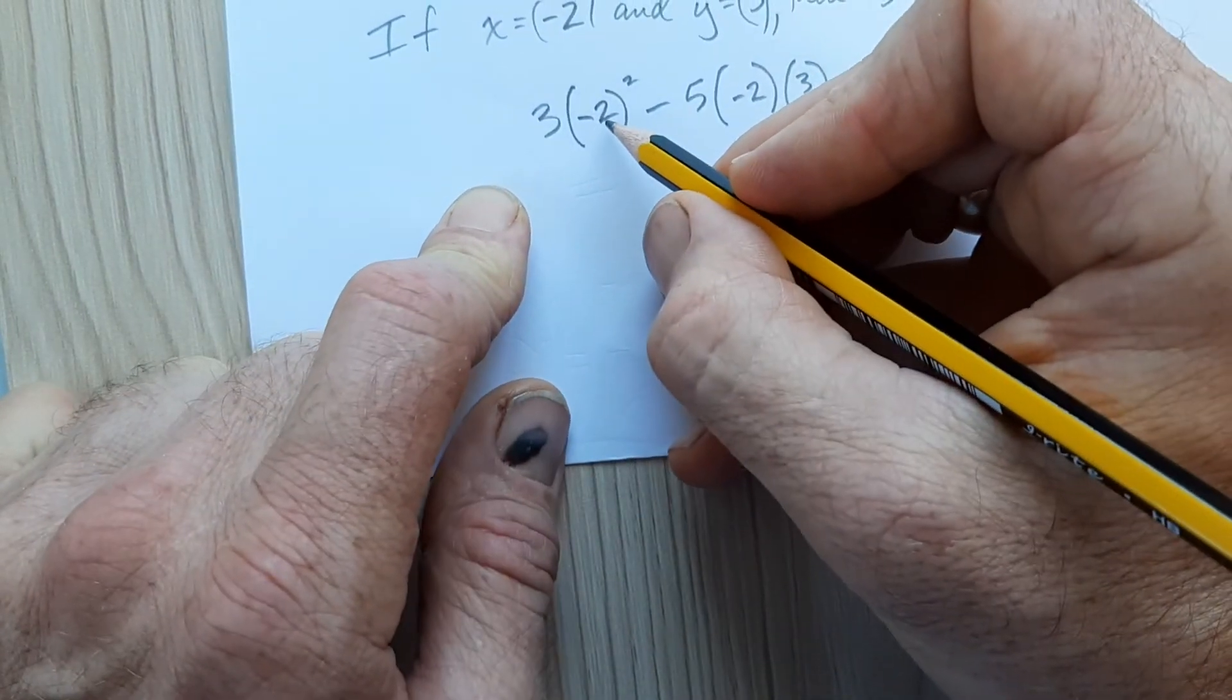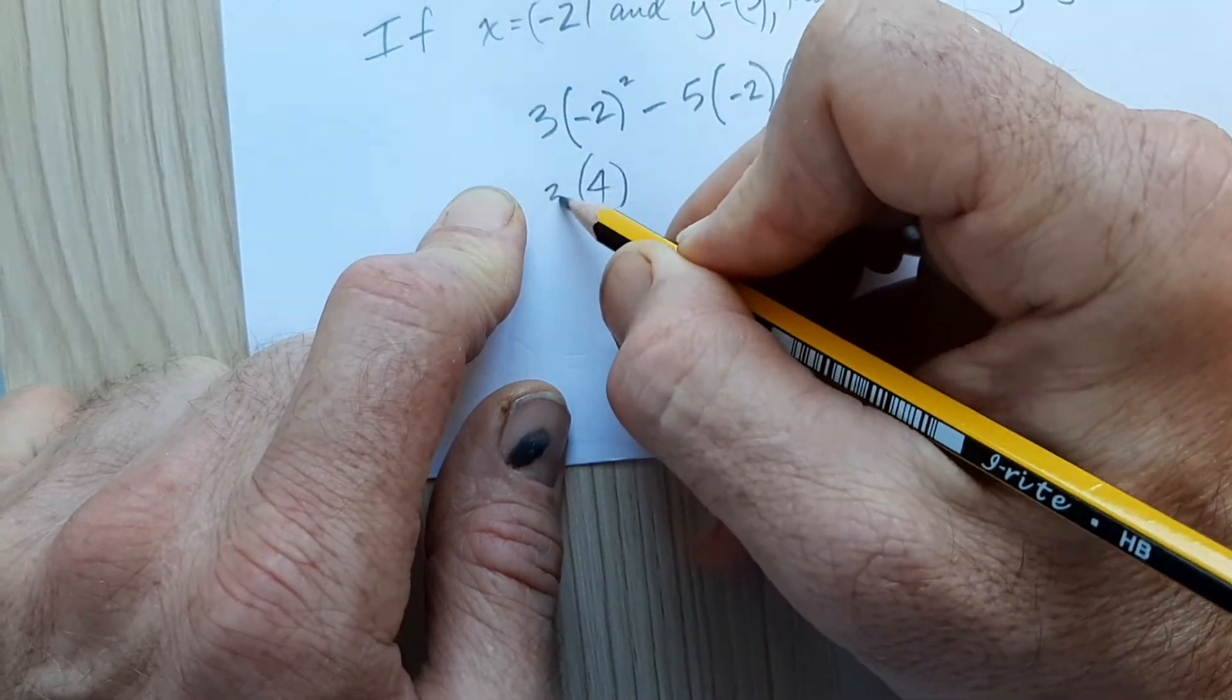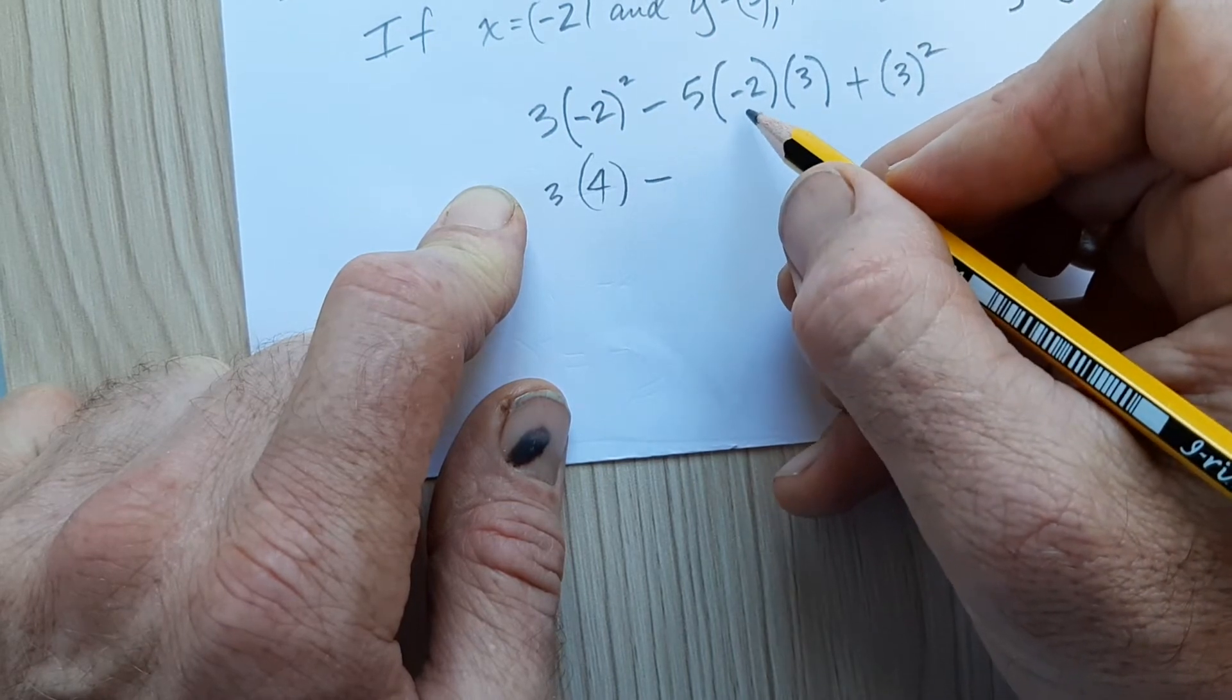I'll do it without a calculator here. We got -2 squared to be 4. So I'll simplify it a step at a time.